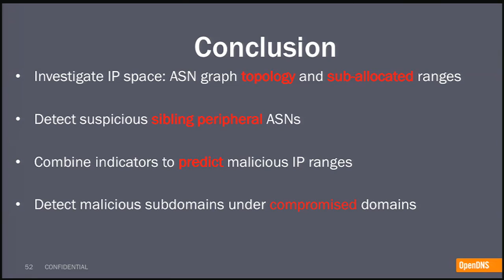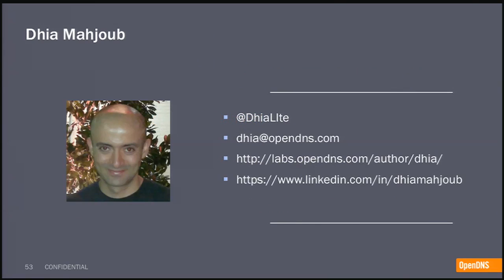In conclusion, we wanted to look at different perspectives in exploring the IP space: one was the topology of the ASN graph, and the other was the sub-allocated ranges. With the first approach you explore sibling peripheral ASNs of a seed ASN. And then if you combine the indicators we mentioned, you can predict the IP infrastructure that will be used by bad actors or criminals. Finally, the growing trend we saw is that nowadays they are abusing compromised domains and injecting sub-domains, pointing them to unrelated IPs to serve attacks. I'll be happy to keep in touch or answer any questions. Thank you.